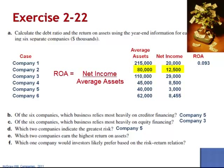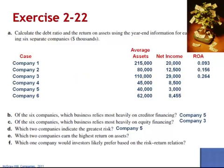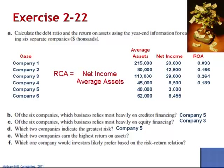For Company 2, $12,500 divided by $80,000 is 0.156. Company 3: $29,000 divided by $110,000 is 0.264. Company 4: $8,500 divided by $45,000 is 0.189. Company 5: $3,000 divided by $40,000 is 0.075. And Company 6: $8,455 divided by $62,000 is 0.136.